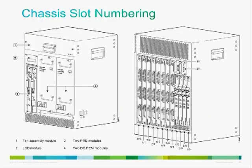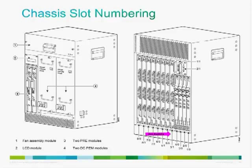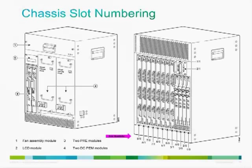On the UBR10K, slot numbering like 5-0 and 5-1 might seem like sub-interfaces of module 5, but they are actually two completely separate line cards. The same applies to 6-0/6-1, 7-0/7-1, and 8-0/8-1, giving a total of eight line cards. These are called sub-slots — different from traditional Cisco routers and switches.